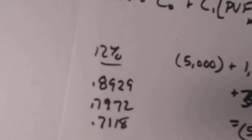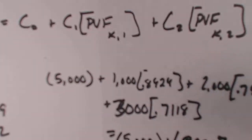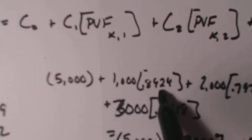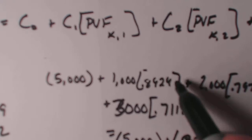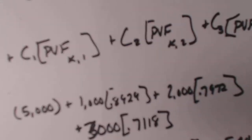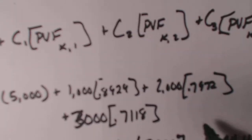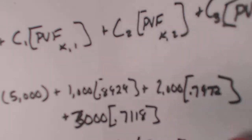So I took my 12% numbers right here. This is my 12% numbers. Just wrote them down, just plugged them in. 1,000 times 0.8929, sorry. Plus 2,000 times 0.7923. Plus 3,000 times 0.7118.